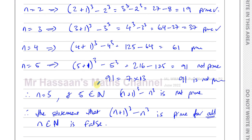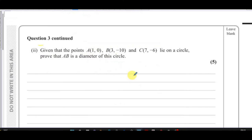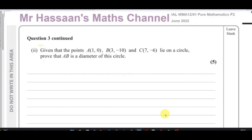Now I'm going to go on to part 2 of this question. Given that points A, B, and C lie on a circle and AB is a diameter of this circle. We can use our knowledge of angles in circles, which is something we learn in IGCSE but revise in AS.